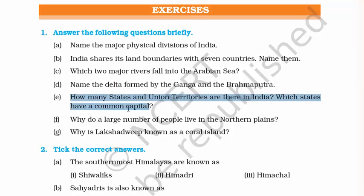Question five: How many states and union territories are there in India? There are 29 states and 7 union territories. Remember it's 29, not 28 — the 29th state is Telangana, formed in 2014.